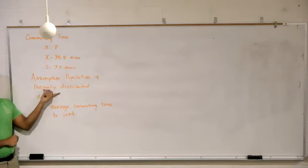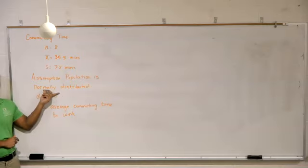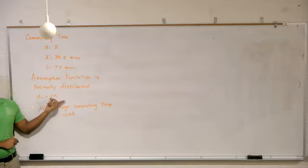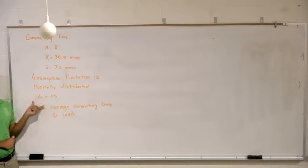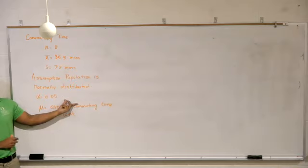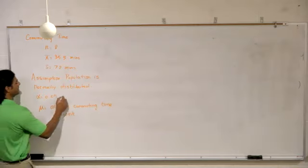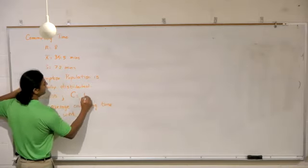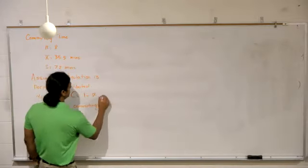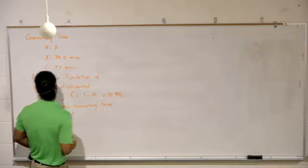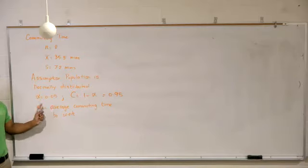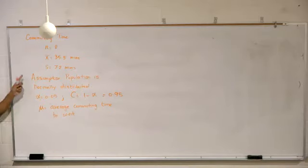Alpha is 0.05, which would mean what amount of confidence? The C level or confidence level is 1 minus that, which gives us 0.95. In other words, we are going to find a 95% confidence interval for the average commuting time to work using that sample information.